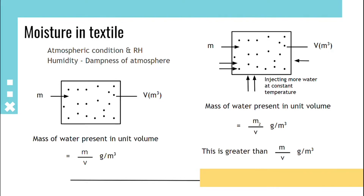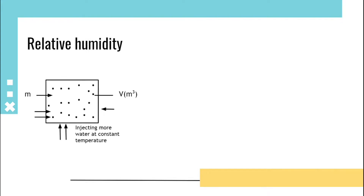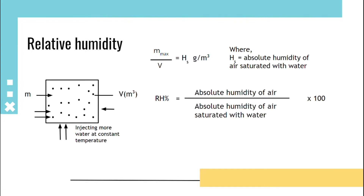Relative humidity: if we are injecting more water at a constant temperature, the mass of water present will be maximum, so that is m_max/v, that is Hs. Hs is the absolute humidity of air saturated with water. RH is nothing but absolute humidity of air (Ha) upon absolute humidity of air saturated with water (Hs), multiplied by 100. That is: RH% = (Ha / Hs) × 100.